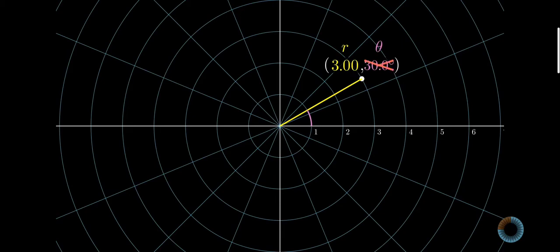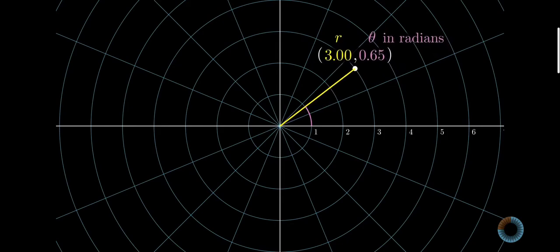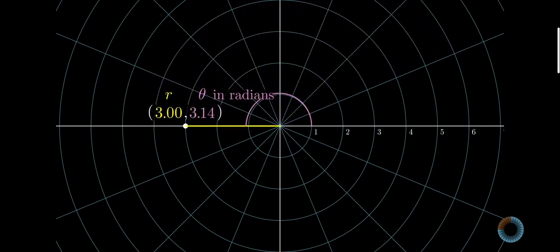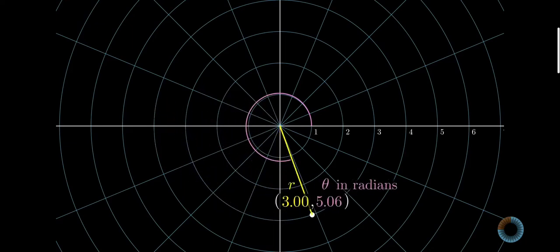And for our purposes, this angle will be measured in radians, which basically means that an angle of pi is halfway around, and then 2pi is a full circle.